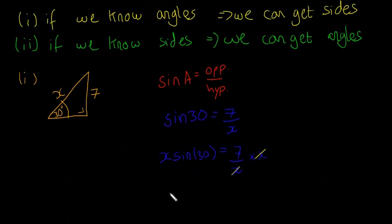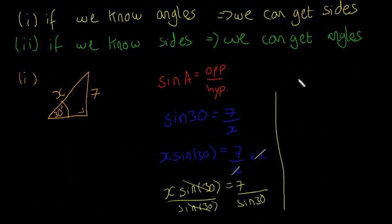Then I'm going to divide both sides by sine 30. Divide this side by sine 30 and divide this side by sine 30. That cancels, and we're left with X equals 7 divided by sine 30. You can stick that into your calculator.